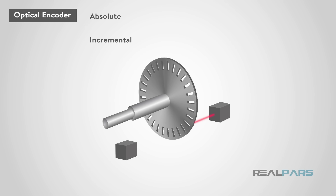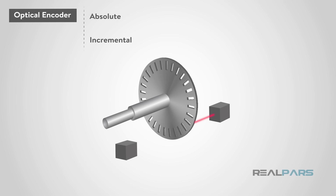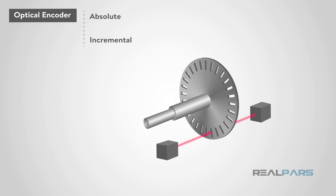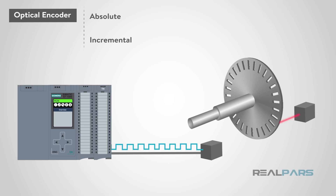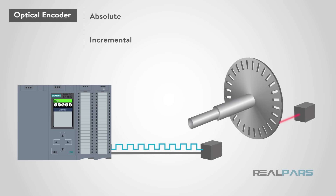After explaining the main groups, you may be seeing a pattern. All the encoders basically do the same thing — produce an electrical signal which can then be translated to position, speed, angle, etc.